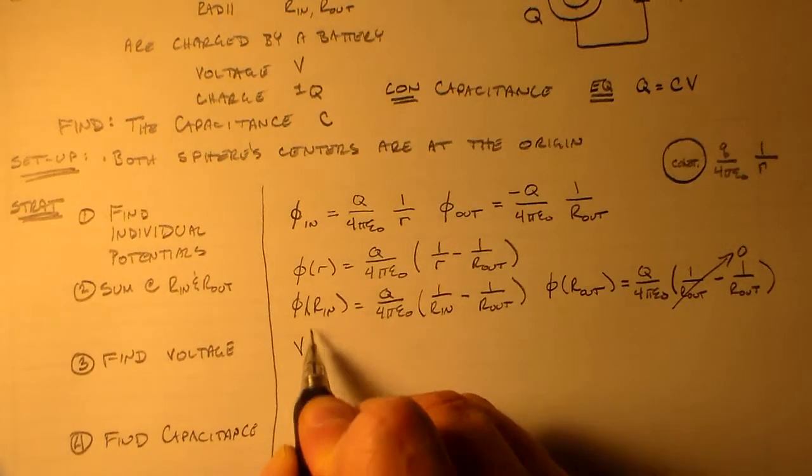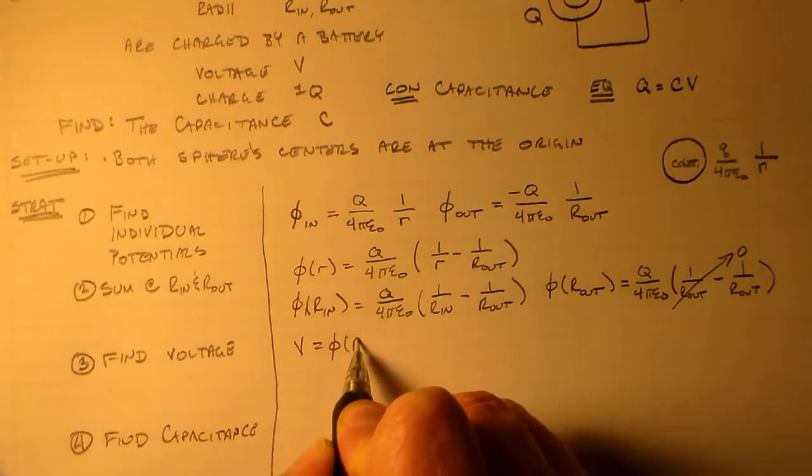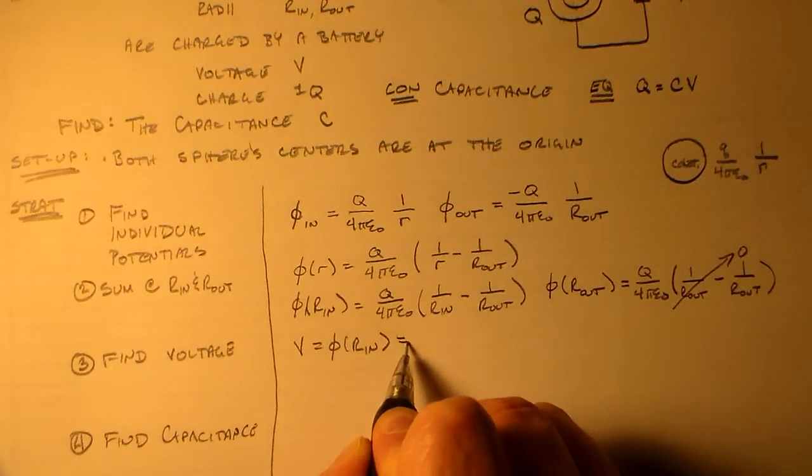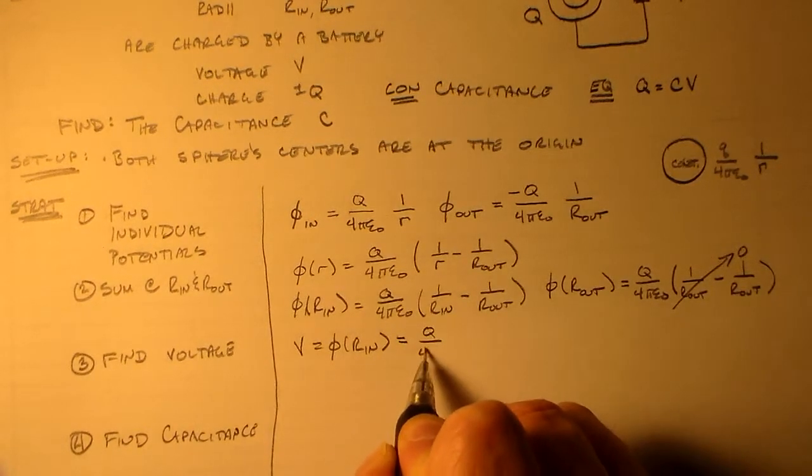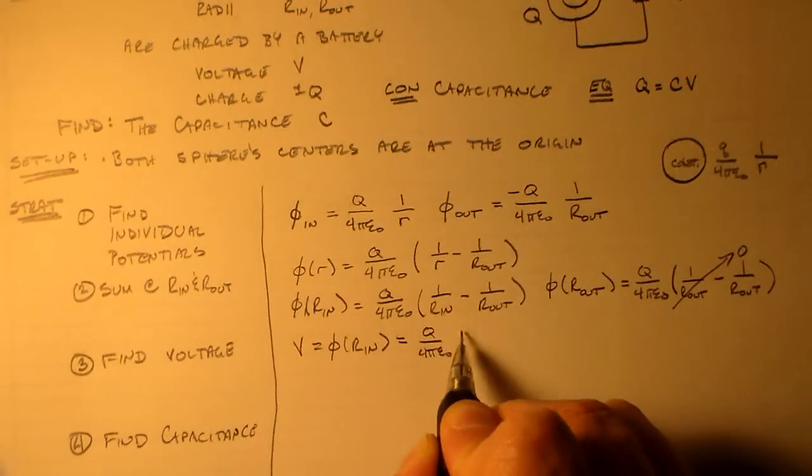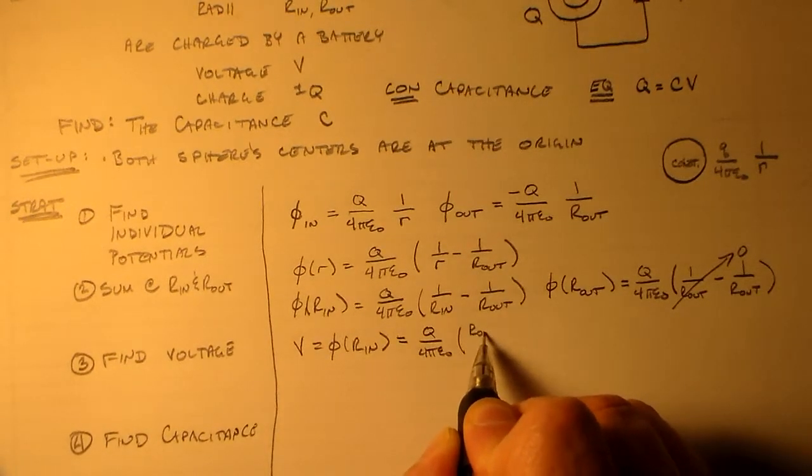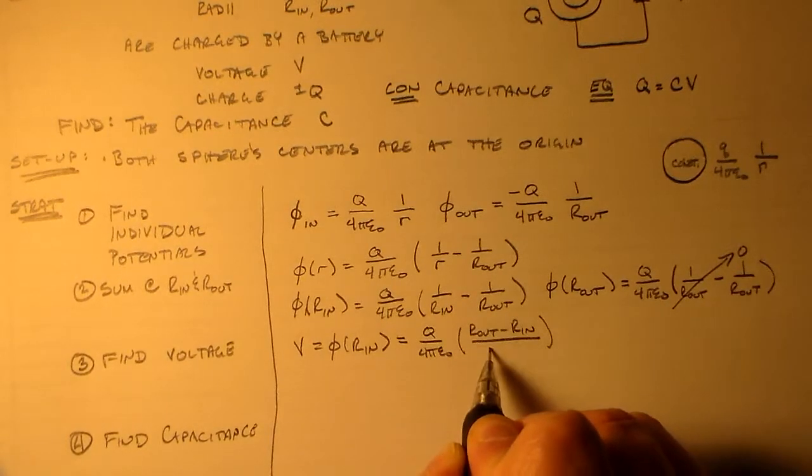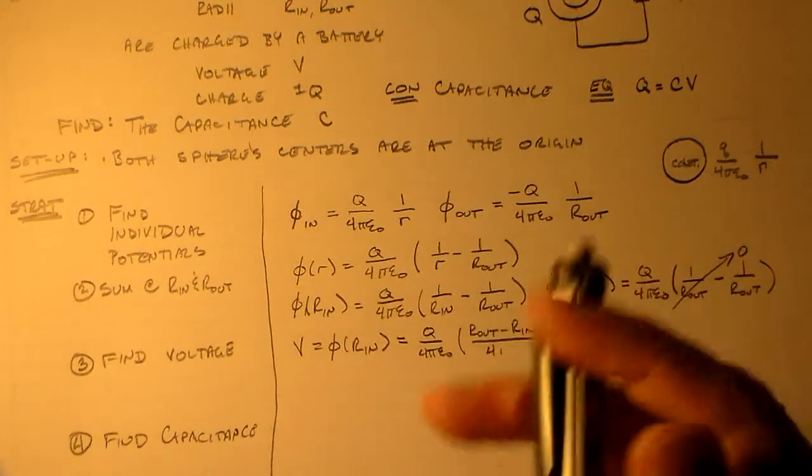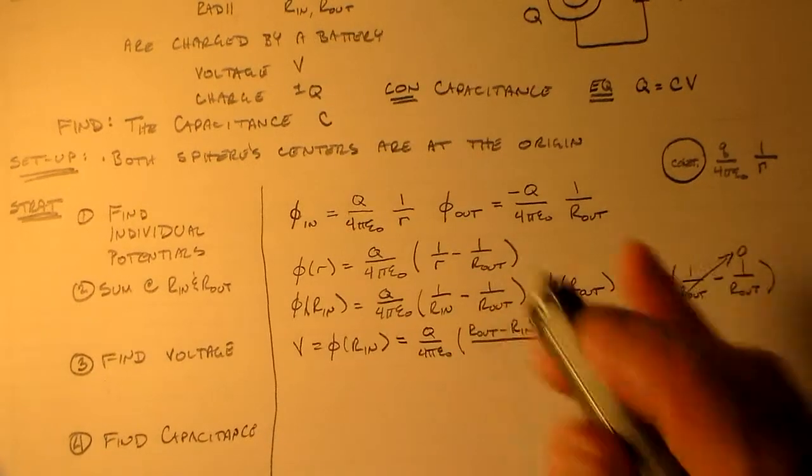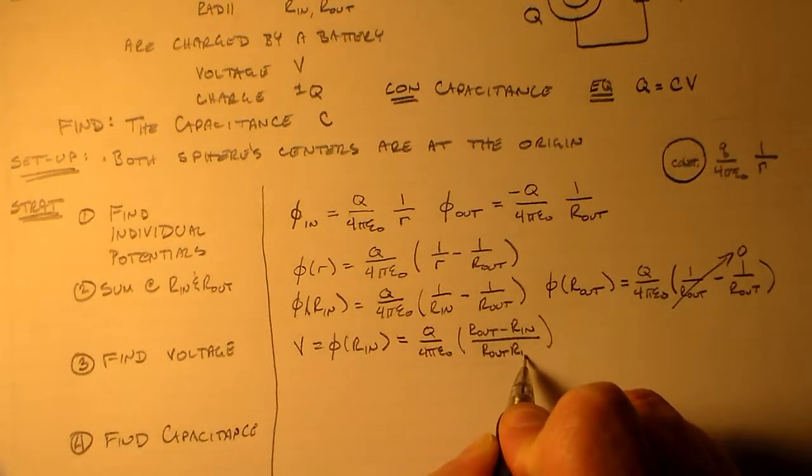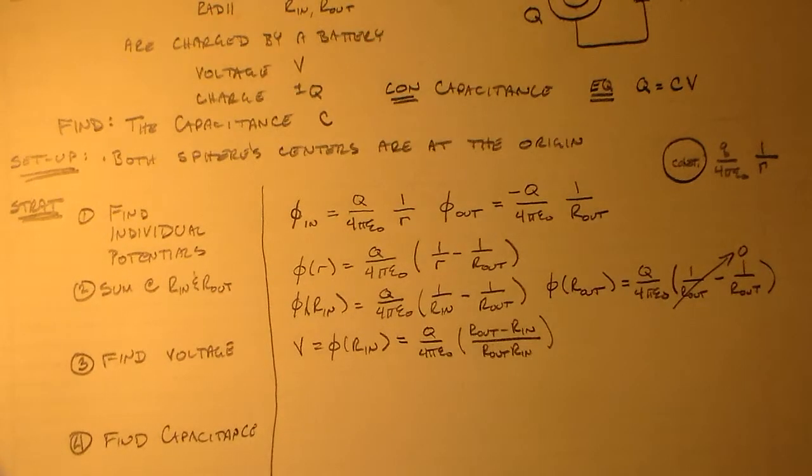So now our voltage is just going to be phi of r_in, which is going to be equal to q over 4 pi epsilon naught. Usually better to rationalize things, so we have r_out minus r_in over the product r_out times r_in. Okay, so this is our potential.